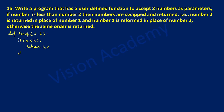Otherwise, that is the else part — write else and put colon. Then, with indentation, it has to return a, b. So here, as stated in the question, otherwise the same order is returned — there will be no swapping.